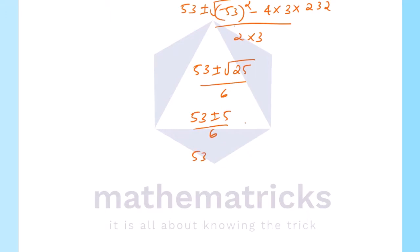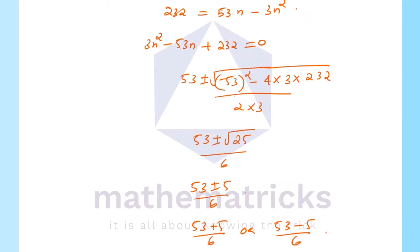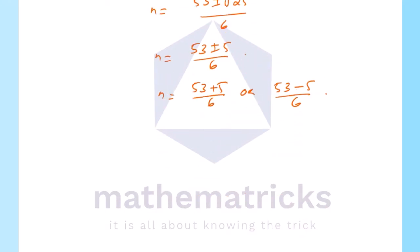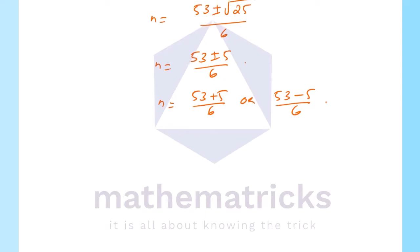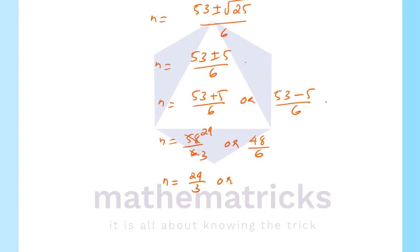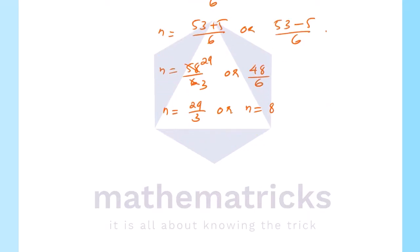So n = (53 + 5)/6 or n = (53 - 5)/6. That is n = 58/6 = 29/3, or n = 48/6 = 8. Since n must be a positive integer, n = 29/3 is not valid. Therefore n = 8.